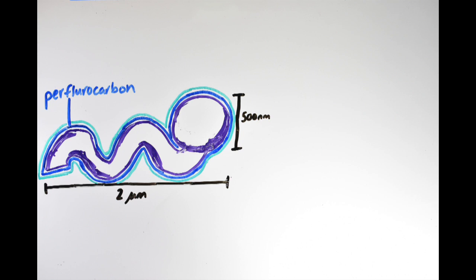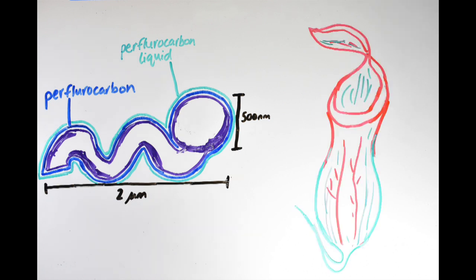A second layer of perfluorocarbon liquid was then added, which fused with the first layer to create a highly slippery surface that greatly reduces adhesion in the eye. This slippery coating was inspired by the carnivorous Nepenthes pitcher plant, which uses a similar waxy substance to trap insects.